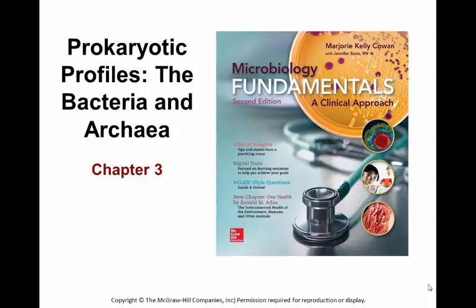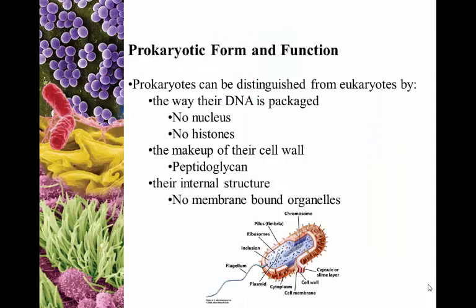A little rehash to start with about the difference between the prokaryotes and the eukaryotes. Prokaryotes have DNA packaged within the cytoplasm — no nucleus, no histone proteins with the DNA wrapped around it. The cell wall is made up of peptidoglycan, a carbohydrate, but not the same thing found in eukaryotic cell walls. Internally, no membrane-bound organelles — lots of cytoplasm with that DNA bundled up on the inside. There will be ribosomes, which are a requirement of all living organisms and are not membrane-bound organelles.